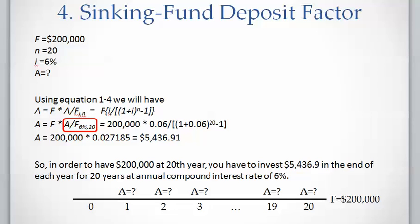So if you want to have two hundred thousand dollars in 20 years from now at six percent interest rate, you will need to invest equal amounts of five thousand four hundred and thirty-seven dollars per year at the end of each year for 20 years, starting from year one.